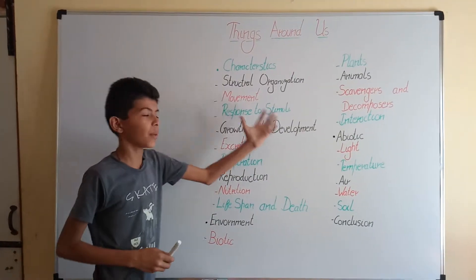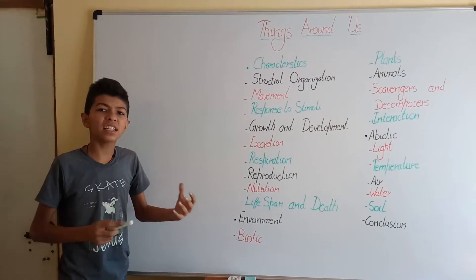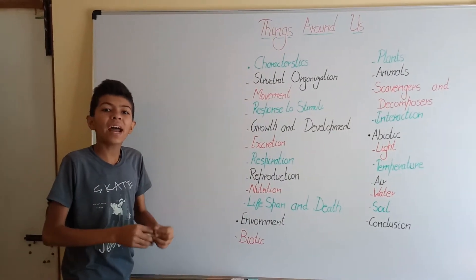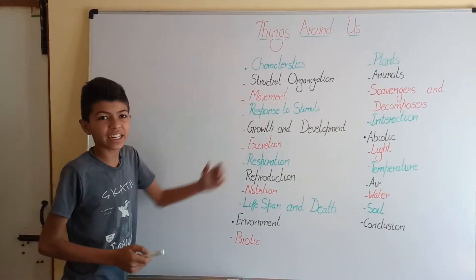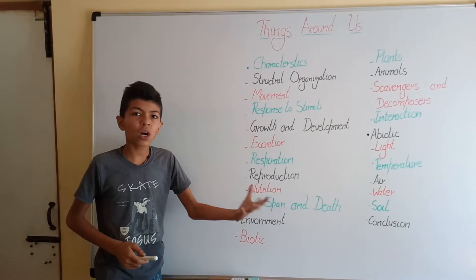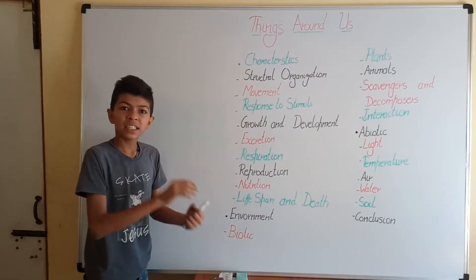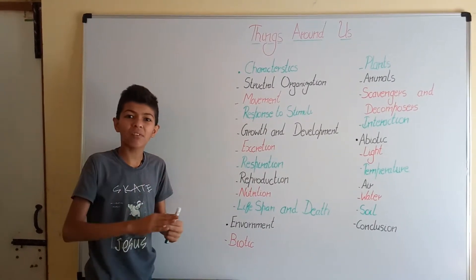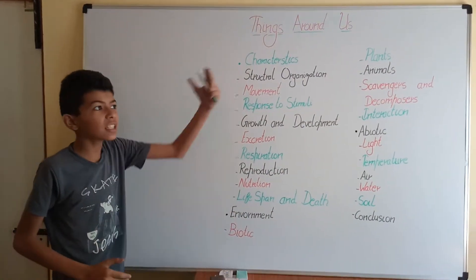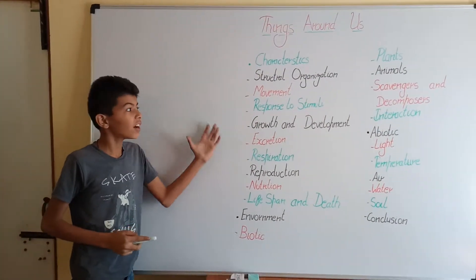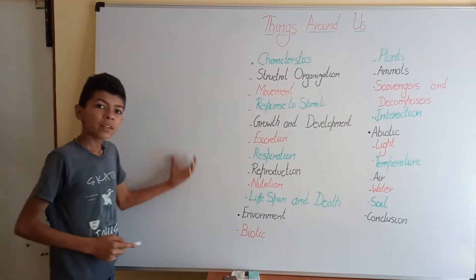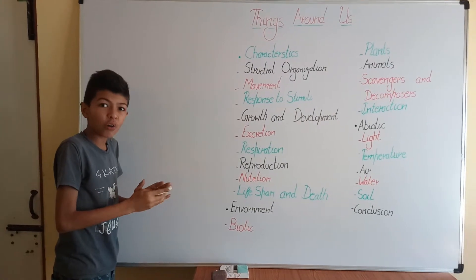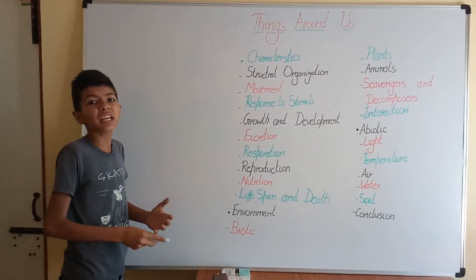Then we have response to stimuli. A stimulus is a sudden or evident change in the environment that causes an organism to do an activity. For example, if you touch a hot pot, the heat is the stimulus and pulling your hand back is your response. Plants also respond — like the Mimosa plant, which closes its leaves when touched, or tree leaves that move when fire is placed near them.